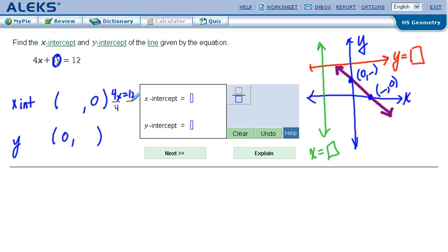We're going to divide by 4, divide by 4, cancel the 4s there on the left. 4 goes into 12 three times. So that would be your coordinate, that would be your x-intercept.